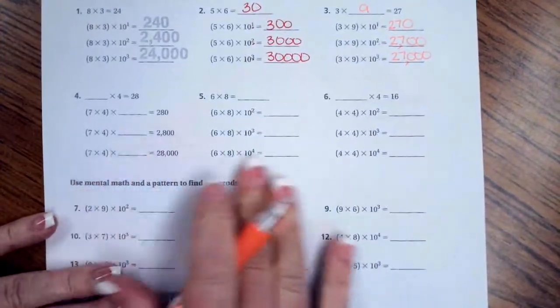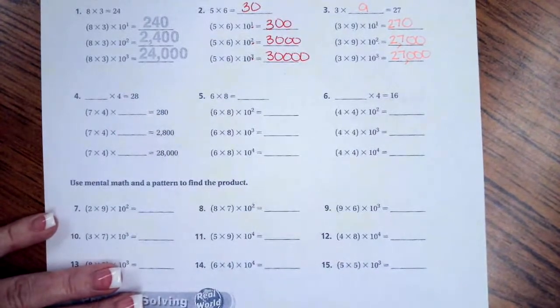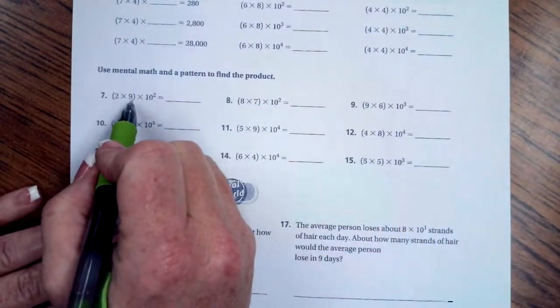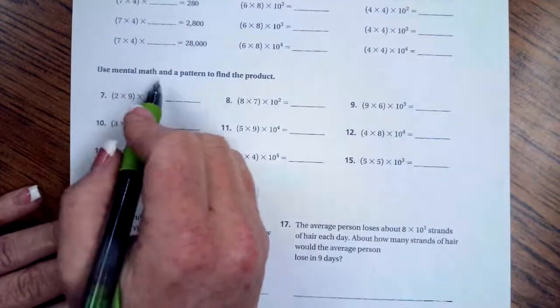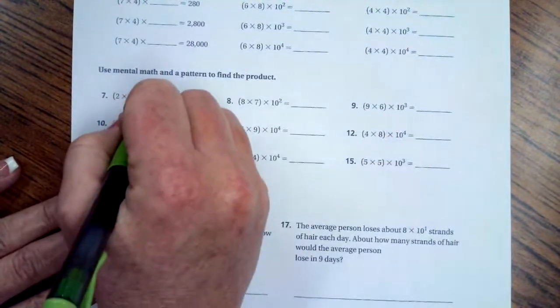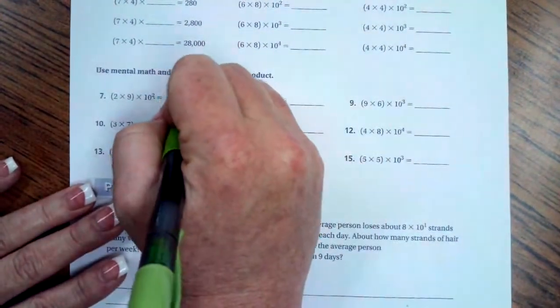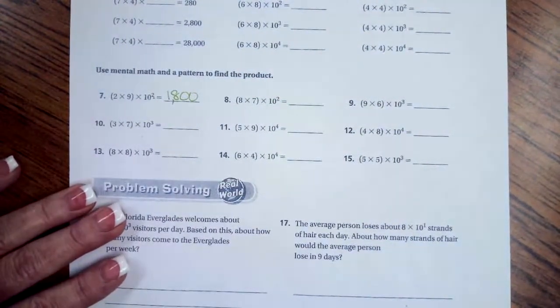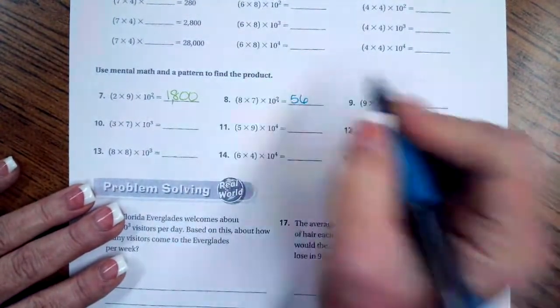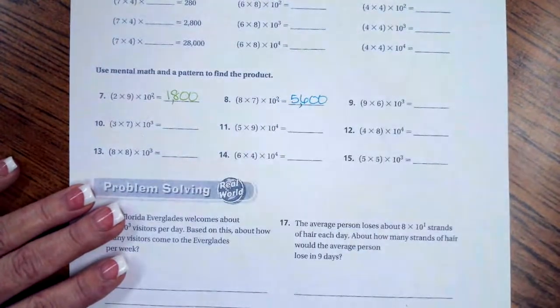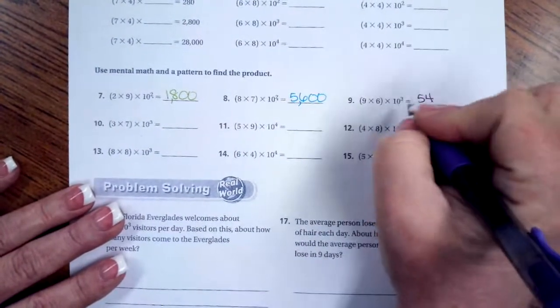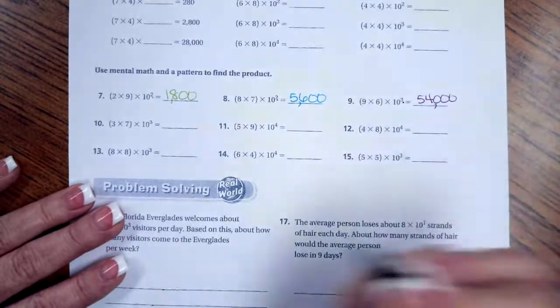You guys go ahead and do 4 through 6. We are going to go down to number 7 and see what's going on. It says 2 times 9 times 10 to the 2nd. So, we're going to use mental math and a pattern to find the product. 2 times 9 is 18. That exponent right there is a 2, so we're going to add 2 0's. Doing the exact same thing. 8 times 7 is 56. That 2 tells us to add 2 0's. 9 times 6 is 54. This exponent tells us to add 3 0's.